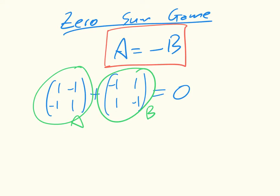But simply changing that to be 1, minus 2, minus 1, 1, and minus 1, 1, 1, minus 1. Well, that's not equal to zero, so it's not a zero-sum game.